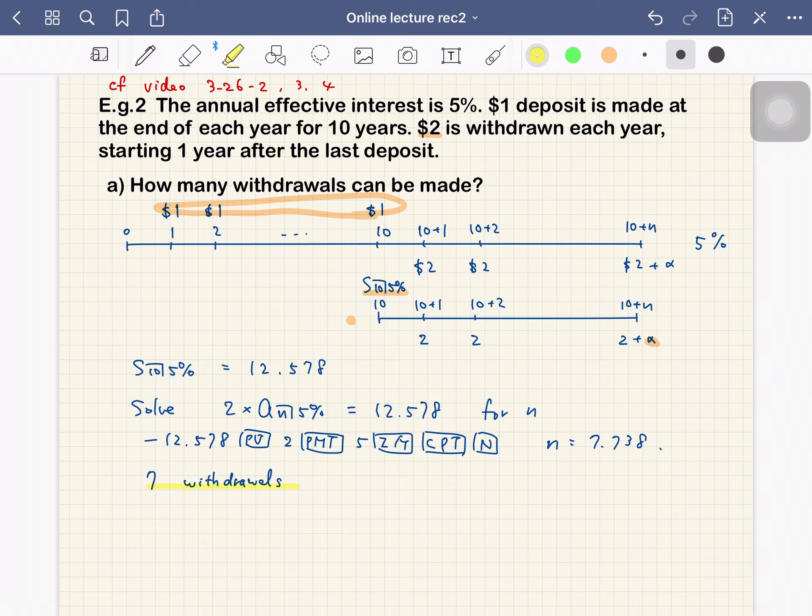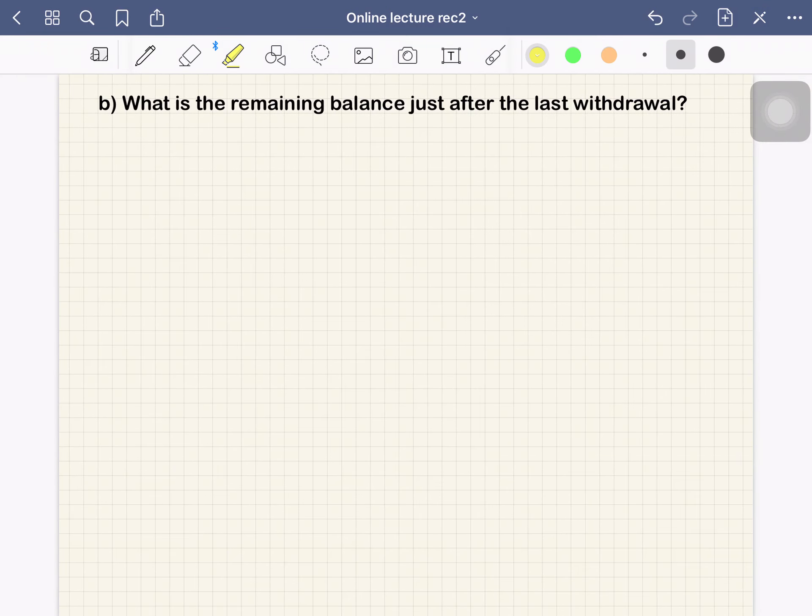And some amount remains still in the account. Okay, so now that we determined n. Next question b: What is the remaining balance just after the last withdrawal? So the timeline is 10 to 17.